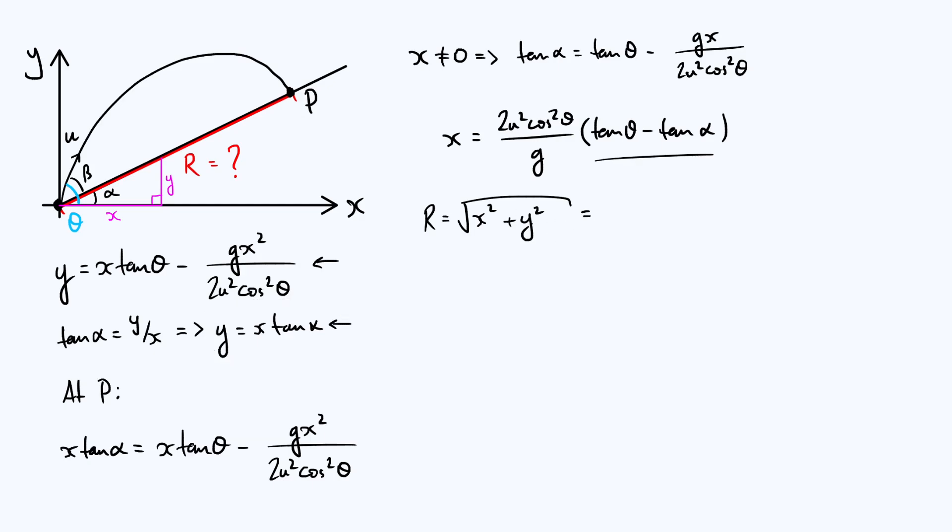So we may as well substitute y in terms of x in that Pythagorean expression there. Keep the x squared as it is. y squared is just going to be x squared tan squared alpha. So then you can factor out the x squared that they have in common and take the root of that and pull out a pre-factor of x, and then under the square root you're going to be left with one plus tan squared alpha. But then you can use the trig identity that one plus tan squared alpha is sec squared alpha, and then you root that and you just get x sec alpha.